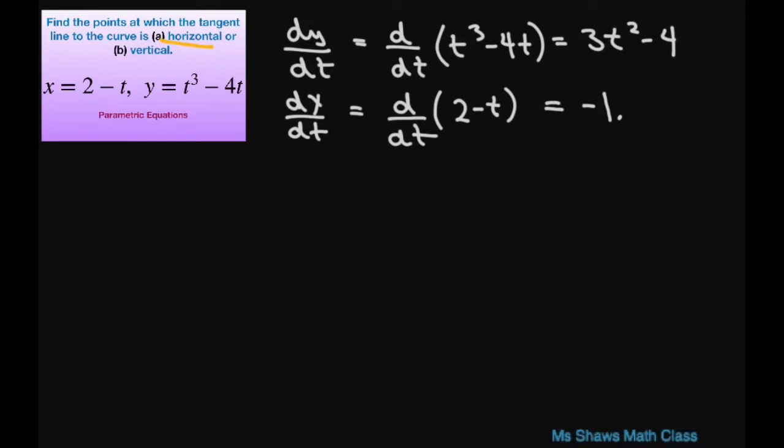the horizontal, that means our derivative for the horizontal, our derivative of y with respect to t has to equal 0. So that means 3t squared minus 4 equals 0.